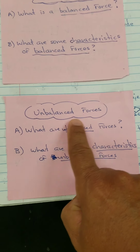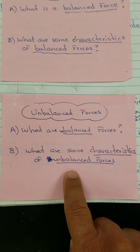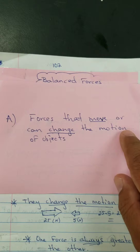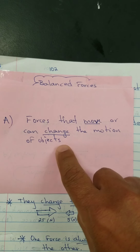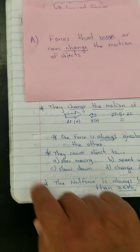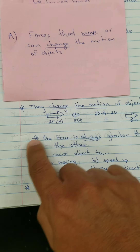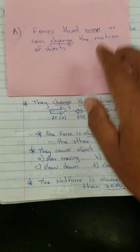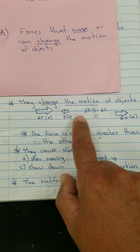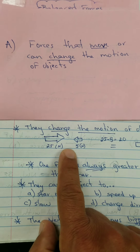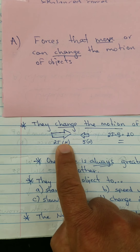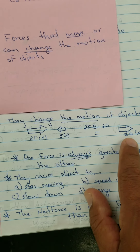Now we're talking about unbalanced forces. What are unbalanced forces? These are forces that move or can change the motion of objects. For example, 25 Newtons versus 5 Newtons — we know 25 Newtons will win, and the net force will be 20 Newtons. You solve that by subtracting, since they're going in opposite directions.